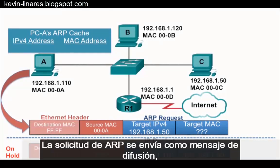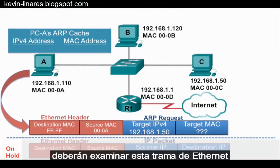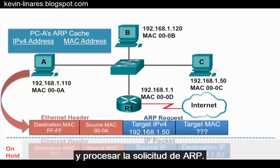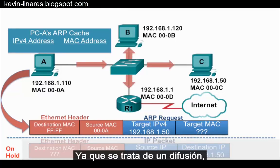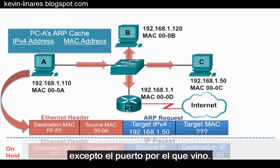The ARP request is sent as a broadcast, so everybody on the network will need to examine this Ethernet frame and process the ARP request. PCA sends it to the switch. Because it is a broadcast, the switch will flood it out all ports except for the port that it came in on.